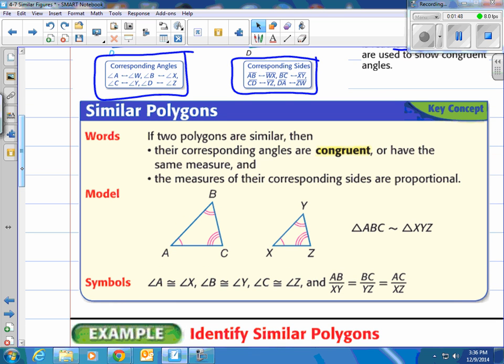Similar polygons, the key concept here. If two polygons are similar, what makes them similar? There's two things you need. Their corresponding angles are congruent or have the same measure. And the second thing, the measures of their corresponding sides are proportional. Proportional meaning the ratios are all equal.